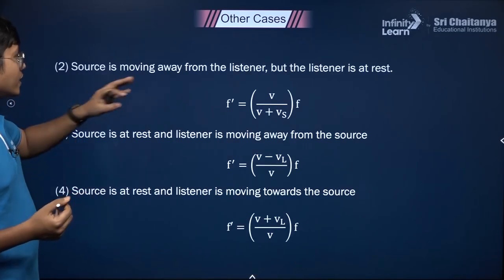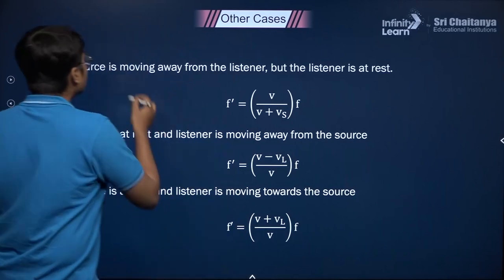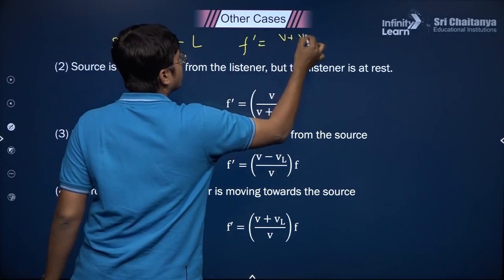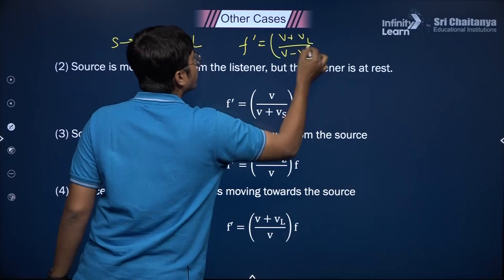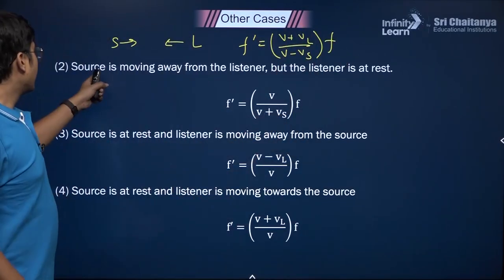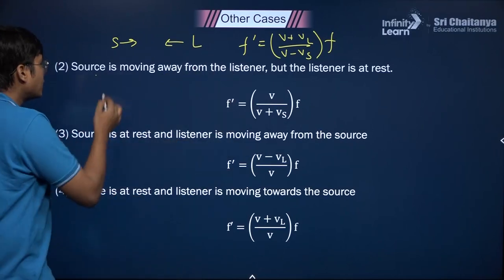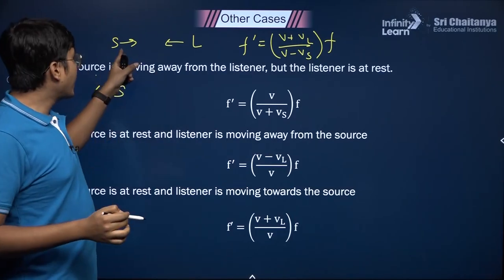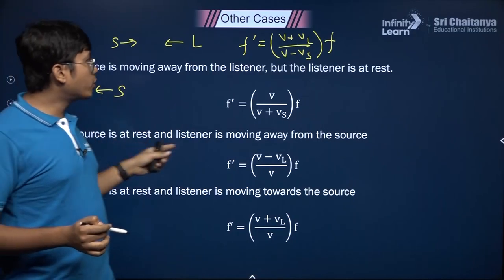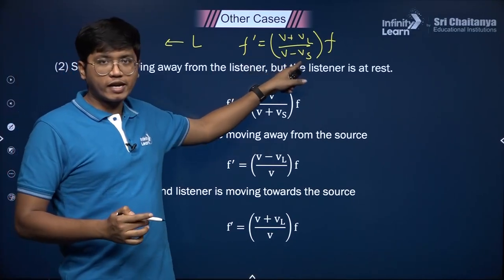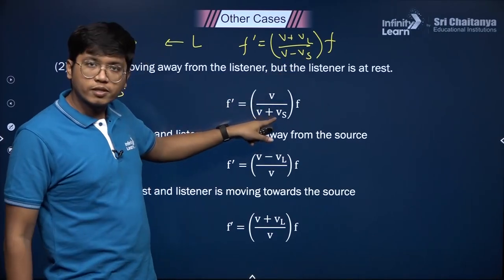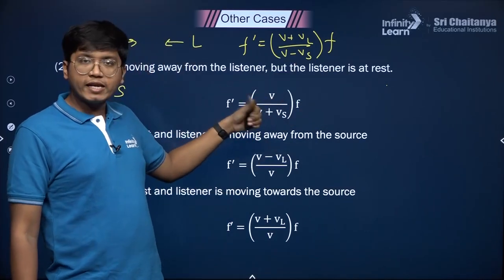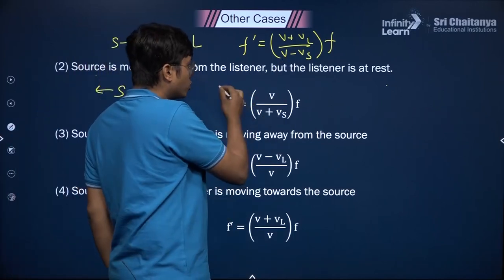Next case: source is moving away from listener, listener is at rest. The source is moving in the opposite direction, so Vs now becomes negative. Putting a negative value of Vs, the denominator becomes V minus (−Vs) = V + Vs. Also, listener is at rest, so Vl = 0. With Vs direction reversed and Vl = 0, you get the relation F' = V / (V + Vs) × F.